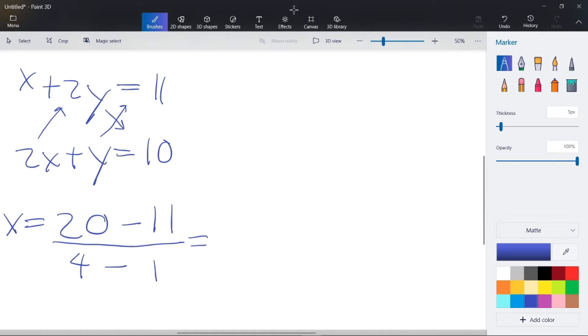So, let's equal those numbers. Then, so, 20 minus 11 over 4 minus 1 equals to 9 and over 3. So, 9 over 3 is equals to 3. We found x. Yeah. We already found x. So, let's find y.